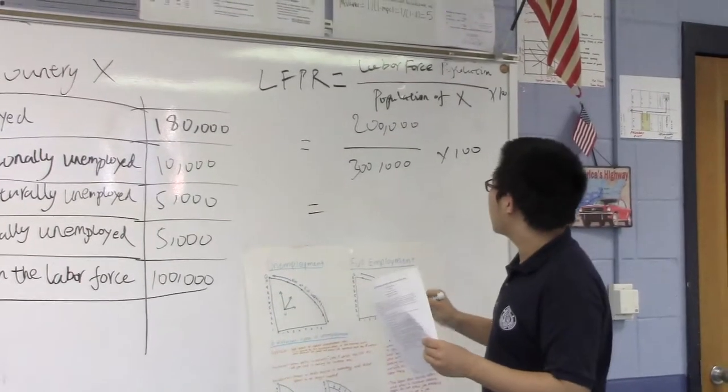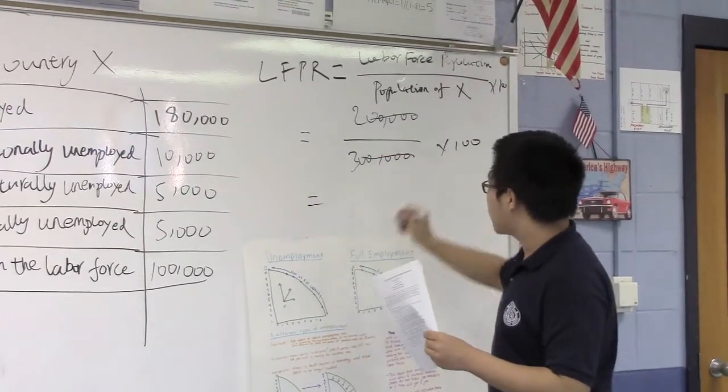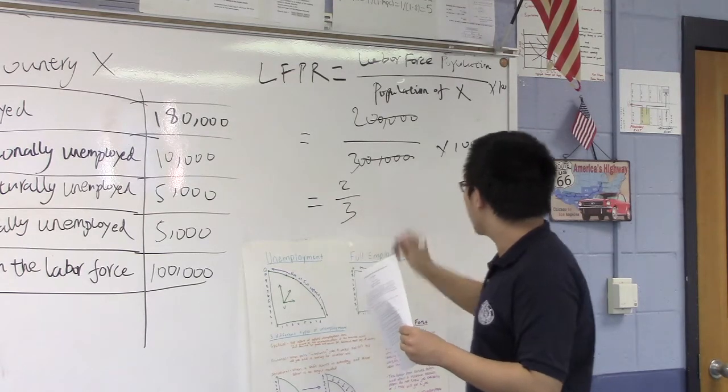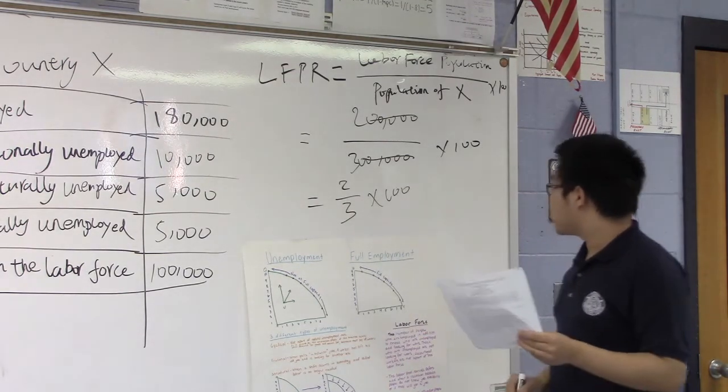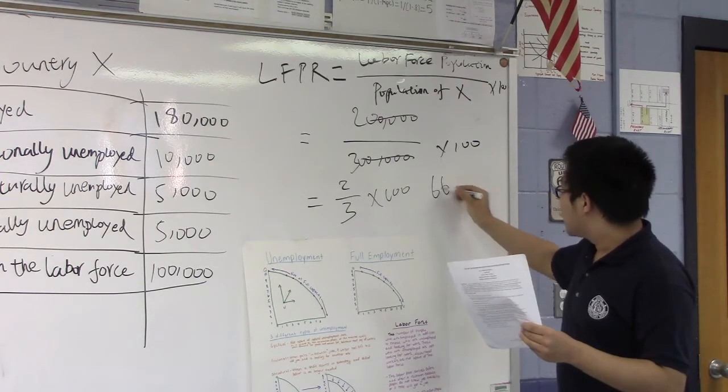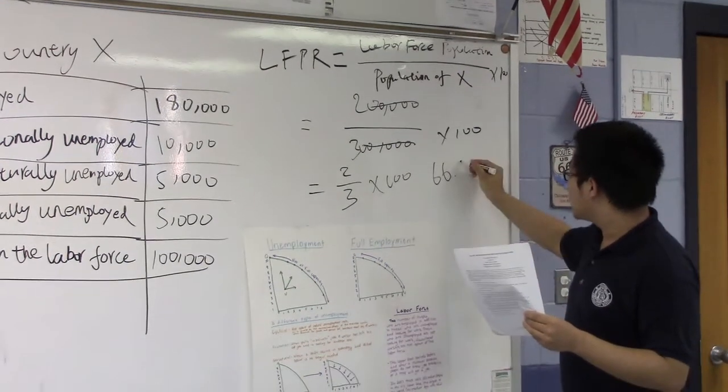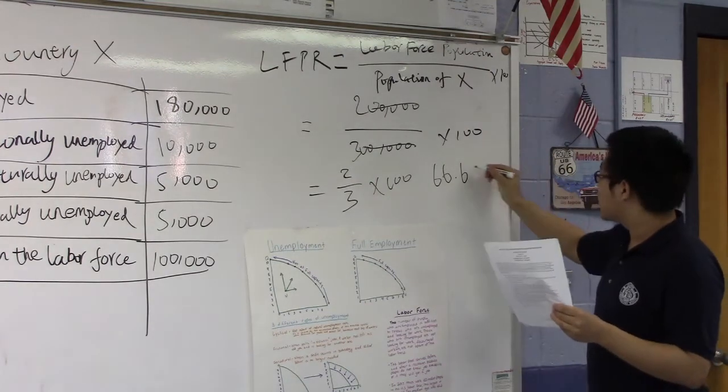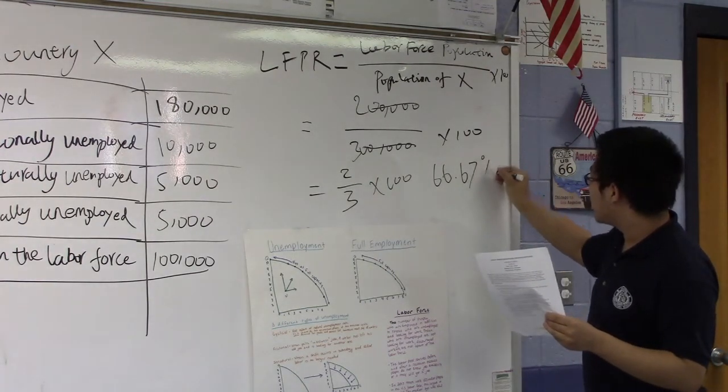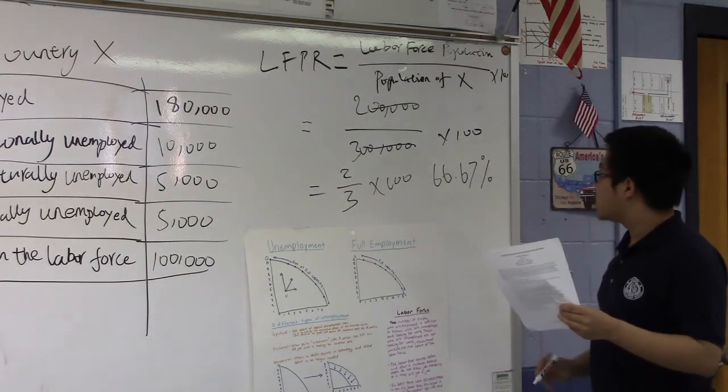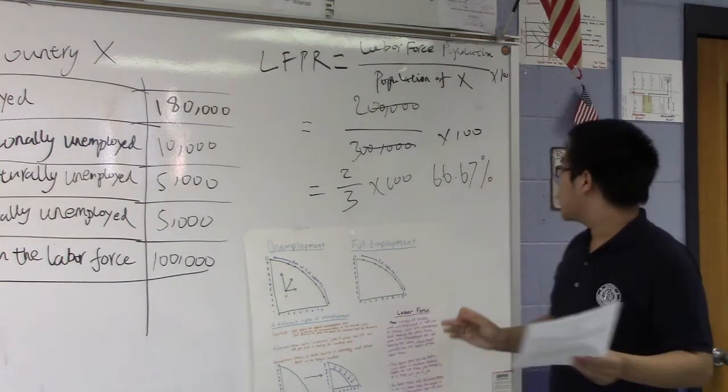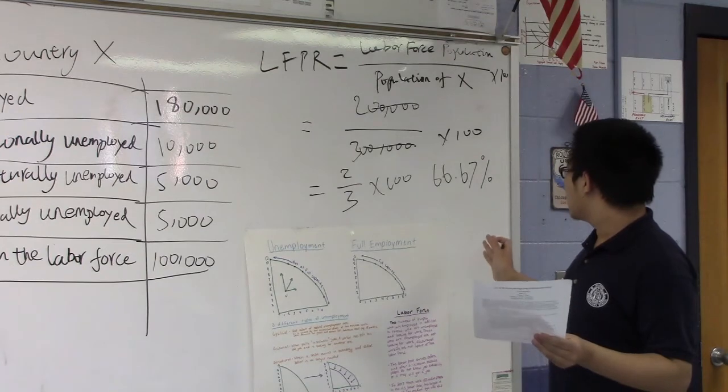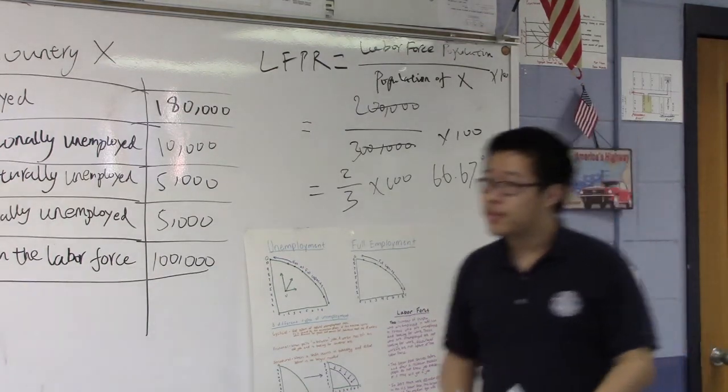Let's eliminate all the zeros. We get 2 over 3 times 100, which is approximately 66.6—it's supposed to be 6, 6, 6, 6, but here let's put a 7 here. So the answer for question C, the labor force participation rate in country X is 66.67%. David, that's excellent.